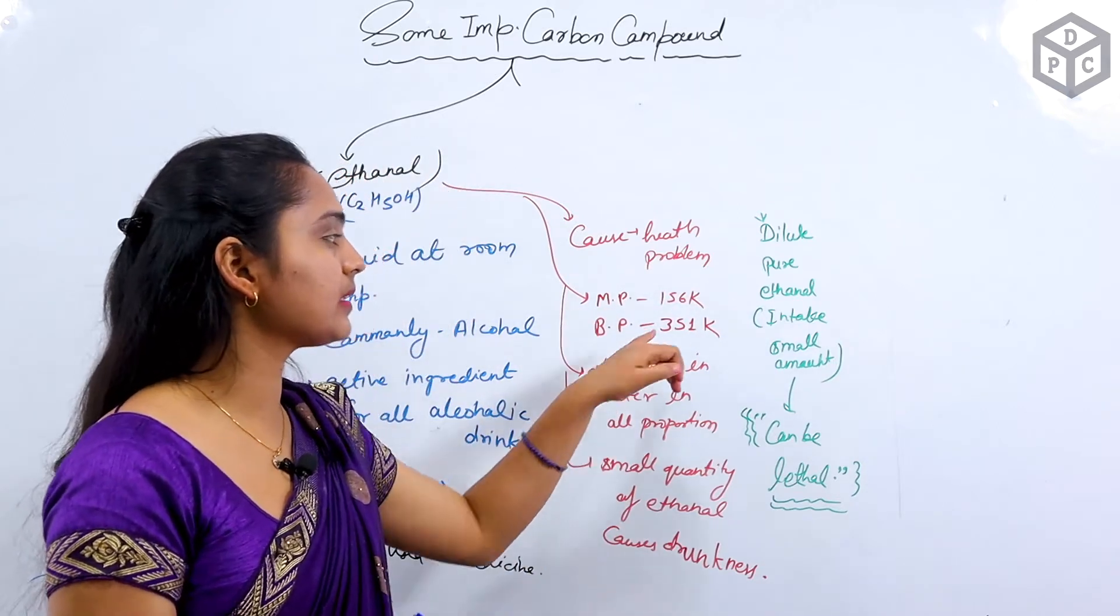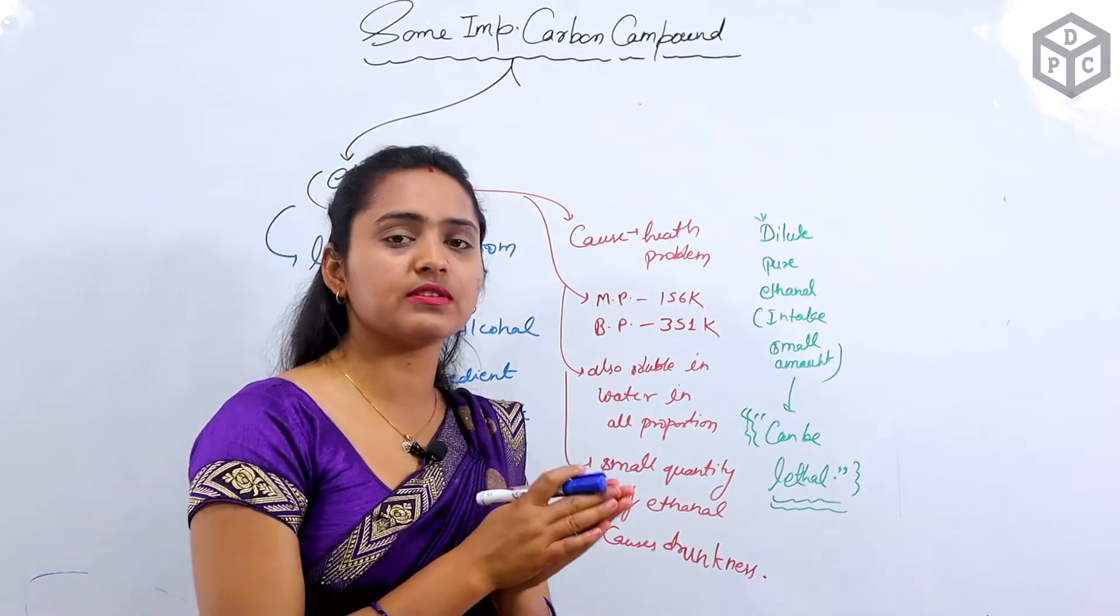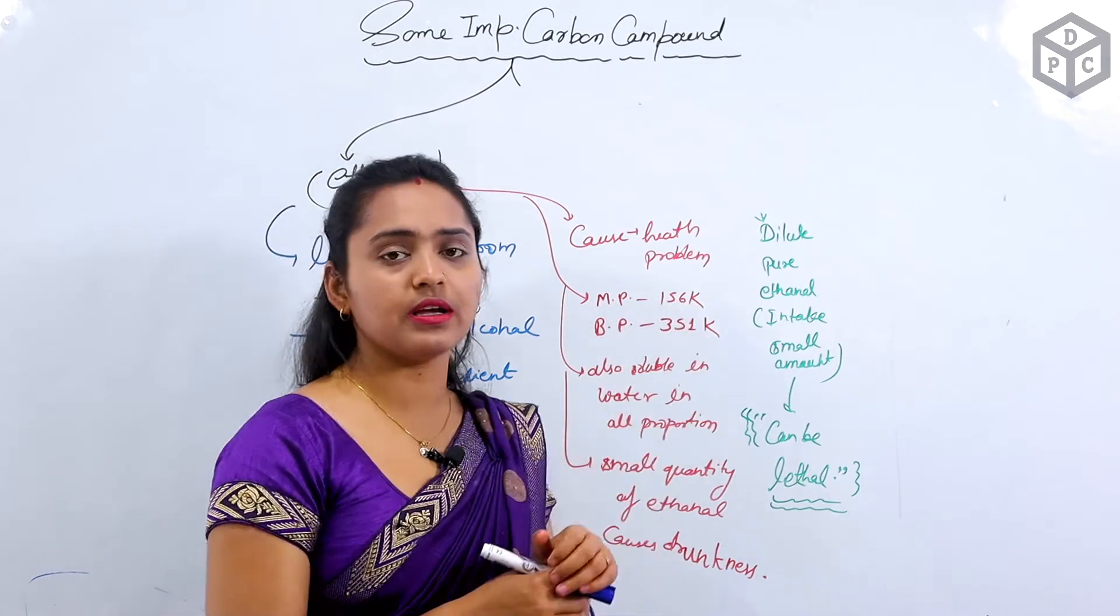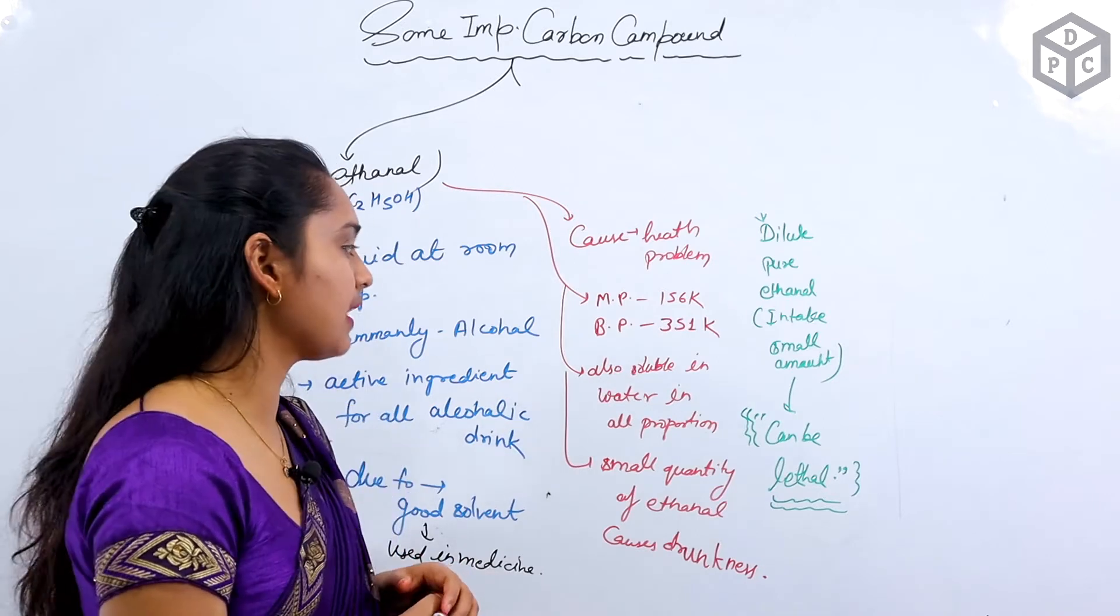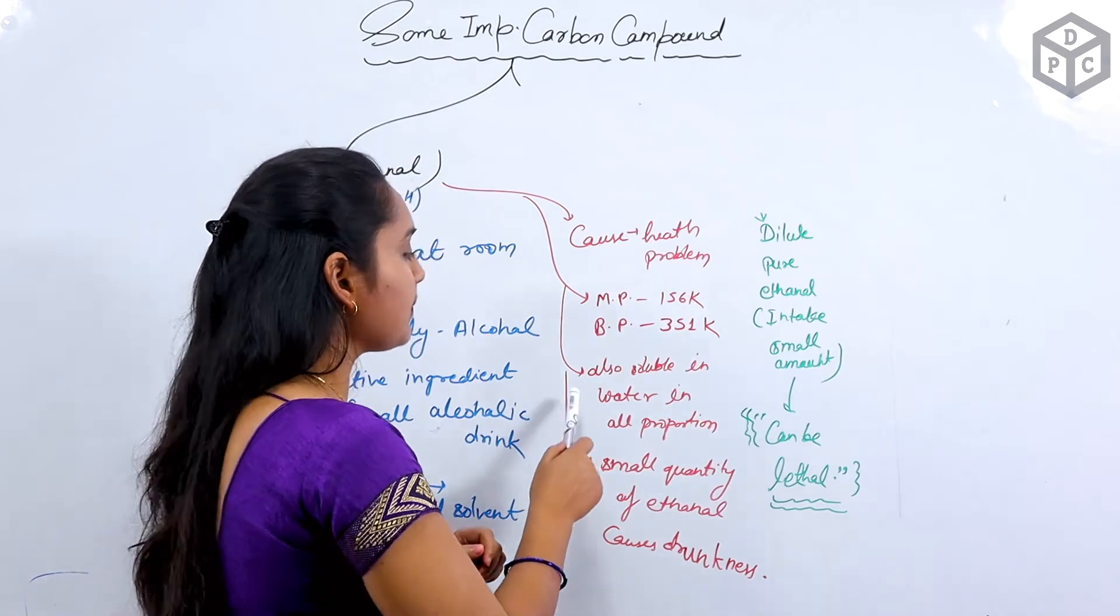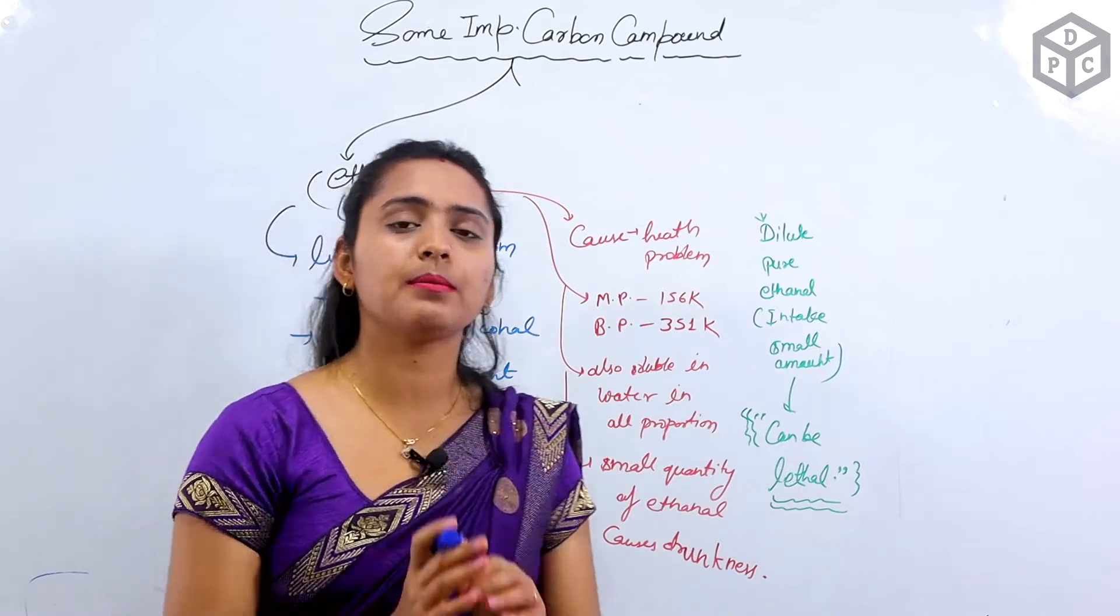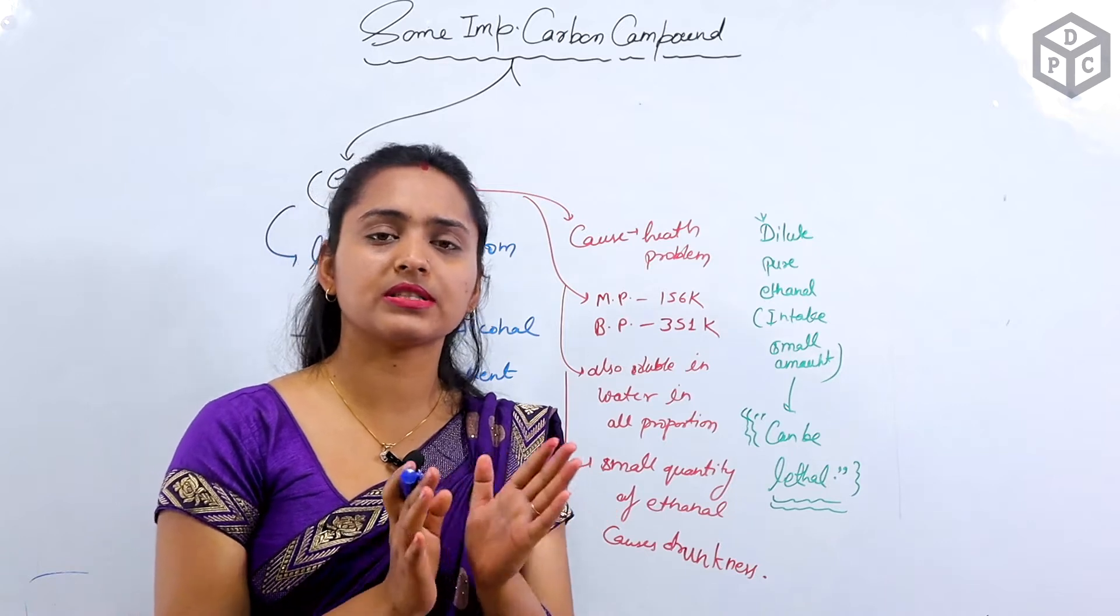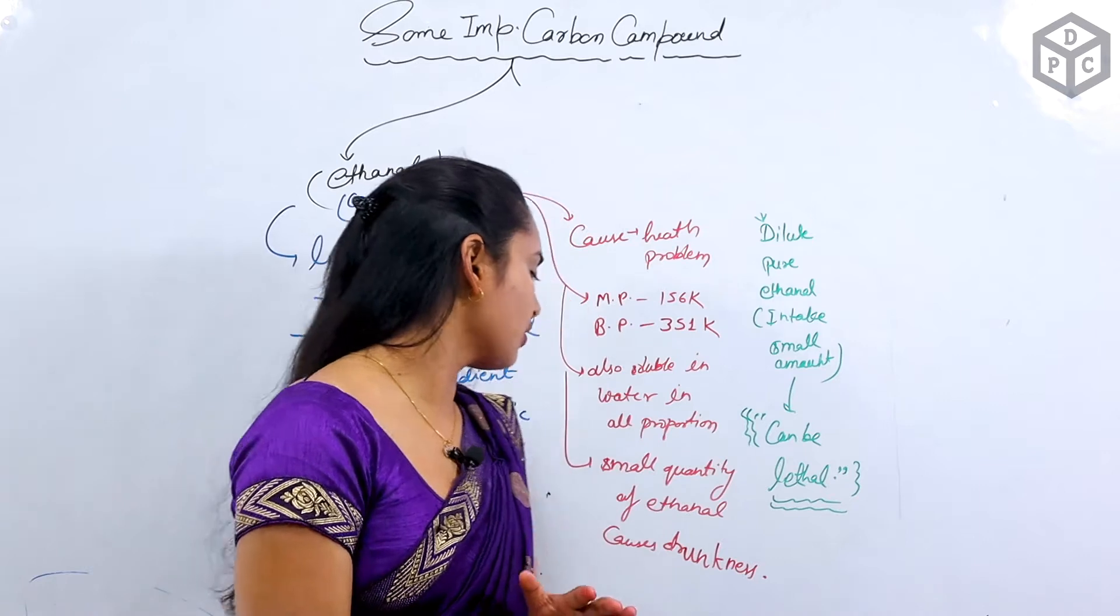How much is the melting point? 150 Kelvin. If we talk about Celsius, we subtract 273. So, melting point is 150K and boiling point is 350K. K means Kelvin and C means Celsius. After that, it is also soluble in water in all proportions. If you use ethanol in a small quantity or large quantity, it will be soluble.